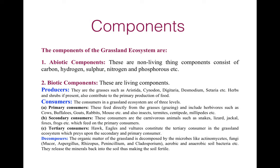Producers form food for consumers at the primary, secondary, and tertiary levels. Primary consumers feed directly on the grasses. These herbivorous animals include cows, buffalos, goats, rabbits, and mice, as well as insects, termites, centipedes, and aphids.